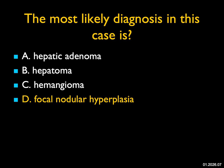Usually FNH is an incidental finding, as it was in this case, but usually they're not this large.